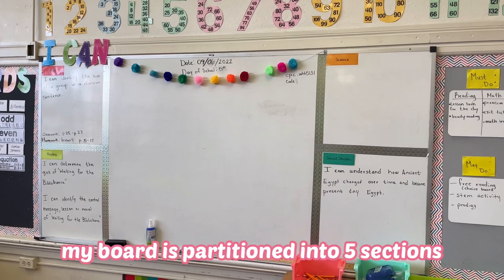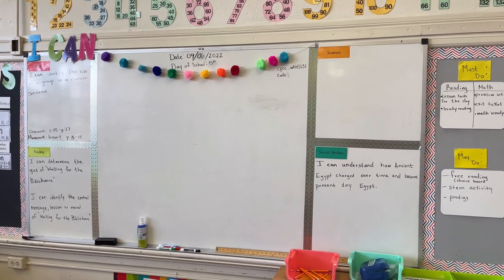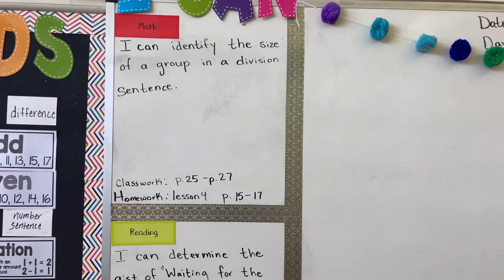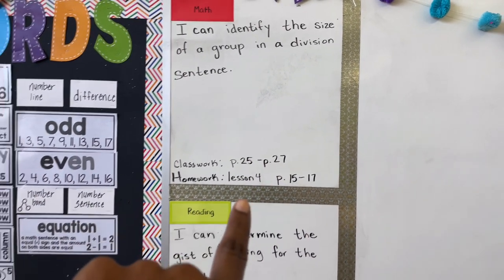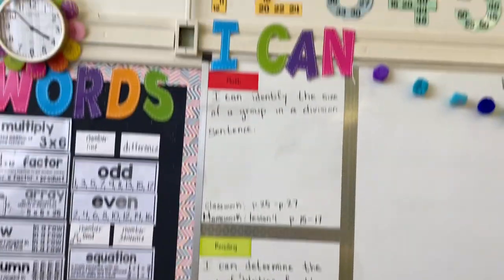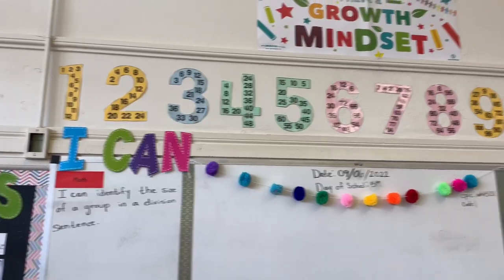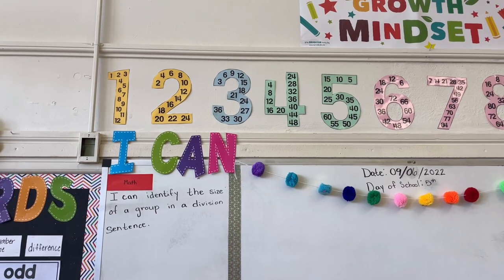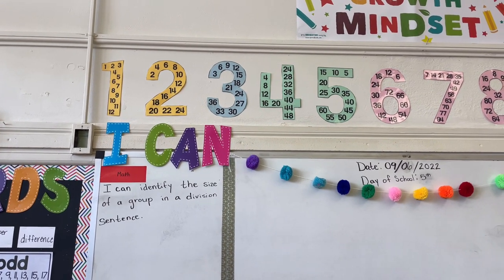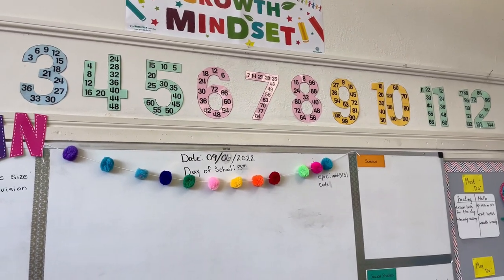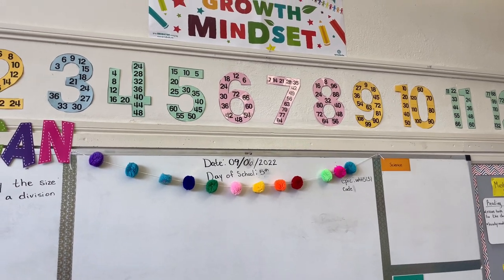For my board I partition it into five quadrants — the smaller quadrants are for each subject area — and within those outer subject areas you'll see our learning targets. For math, because we have math homework, I put the pages for the homework as well as our classwork pages so I'm not having to find them — I'll do that the day prior. We also have our I can statements. These are our multiplication numbers, which are great for giving kids quick access to the multiples as they skip count. These are great for building multiplication facts, and the kids use them throughout the year as a reference to build multiplication fluency.